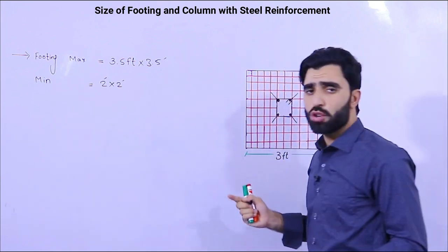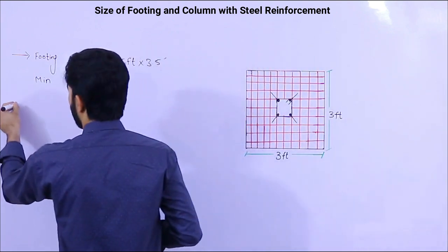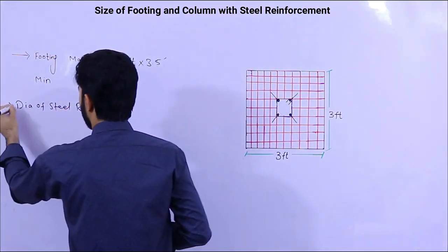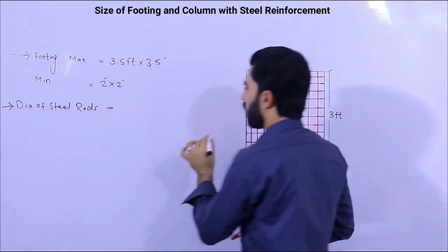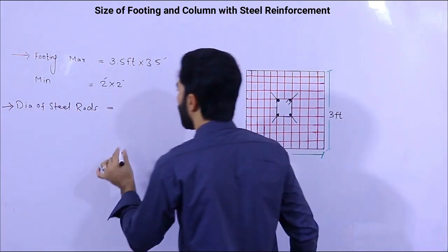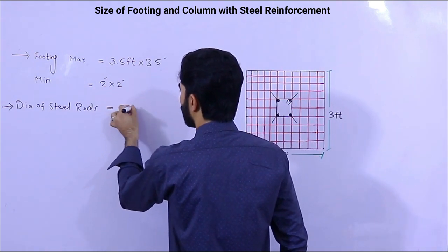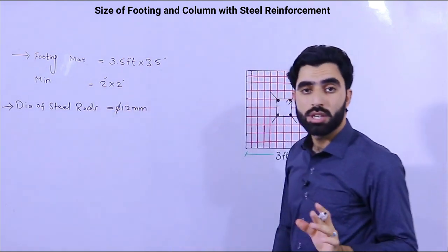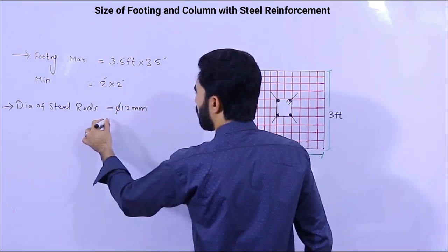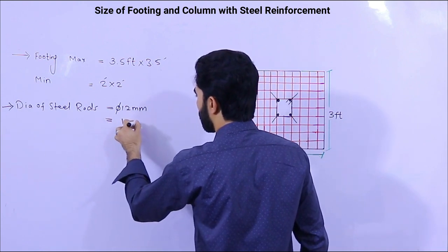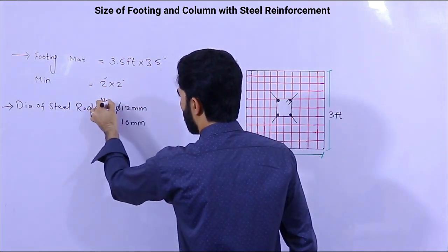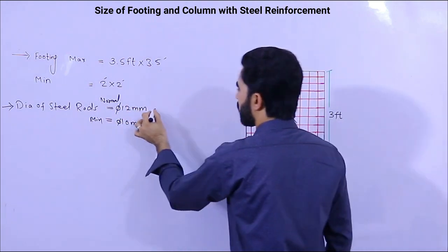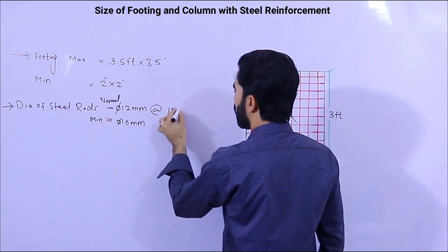Now for complete steel reinforcement — the diameter of steel rods: for normal residential use, the diameter of steel reinforcement should normally be 12 mm, but the minimum should not be less than 10 mm. As for spacing, it should not be more than 150 mm center to center distance between two steel rods.